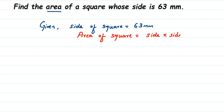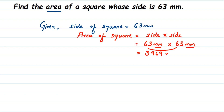Since the side is 63 millimeters, the area is 63 mm × 63 mm. When you multiply, you get 3969, and millimeter × millimeter gives millimeter squared. So the area is 3969 mm². The area unit will always be in square units.